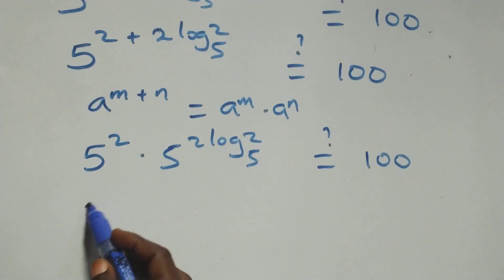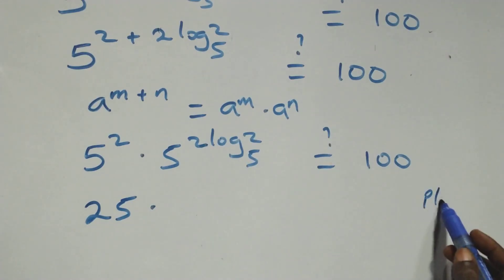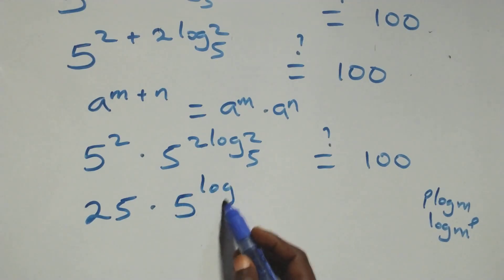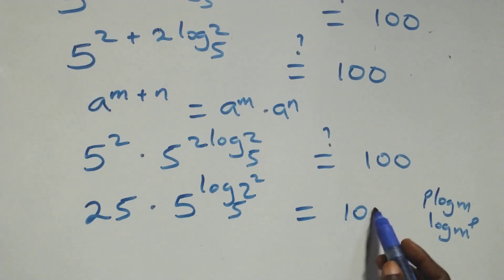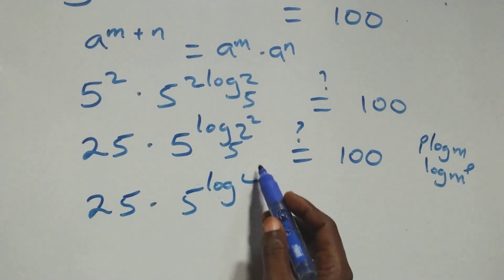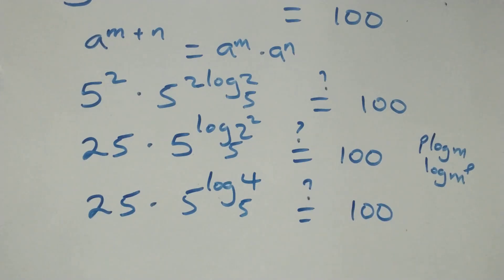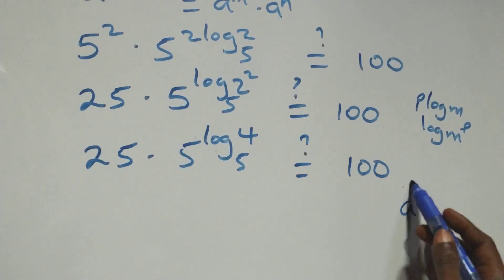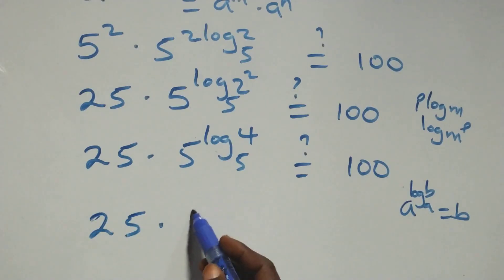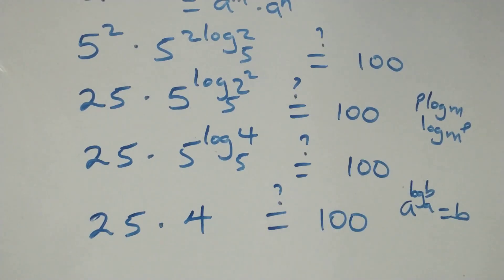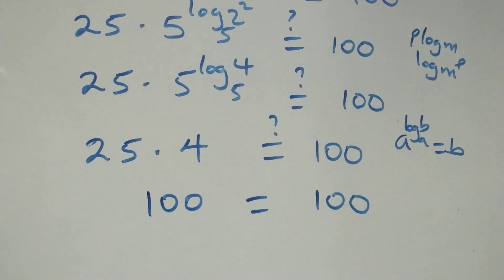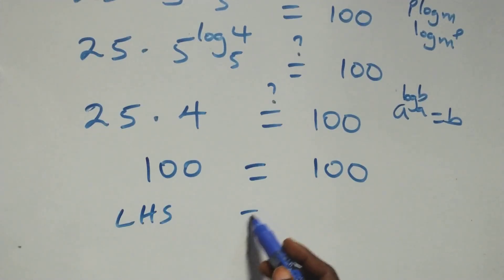Here we have 5 squared, which is 5 times 5, that is 25. We reverse the power log rule: p log m can be written as log m raised to power p. So we have 25 times 5 raised to power log(2 squared) to base 5, where 2 squared is 4. This equals to 100 on this side. By the law of logarithm, a raised to power log_a(b) equals b. Therefore what we have becomes 25 times 4. Is this equal to 100? Of course, 25 times 4 gives us 100, which equals 100. Since the left-hand side equals the right-hand side, our solution is verified.